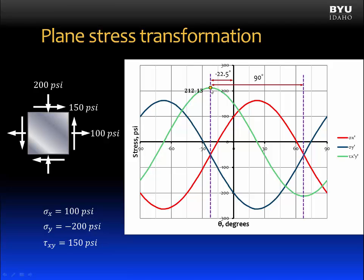When at a point of maximum in-plane shear stress, rotating the element positive or negative 90 degrees reaches another condition of maximum in-plane shear stress. At that point the shear stress value is negative, but the magnitude is the same, and sigma x prime and sigma y prime remain equal. Finally, the principal normal stress state is exactly 45 degrees offset from the maximum in-plane shear stress state — and that is always true.